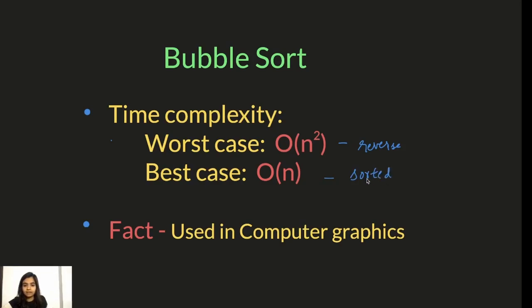And there's a fun fact about bubble sort — it's used in computer graphics because it can detect small errors and fix them very easily in linear complexity.